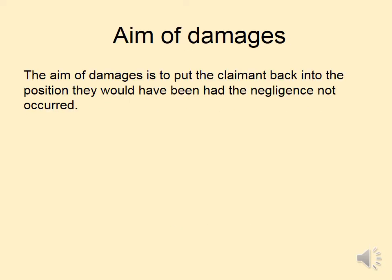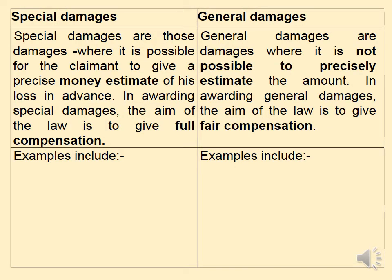The aim of damages is to put the claimant back into the position they would have been in had the negligence or whatever the tort might be not occurred. Damages can be split into two types. Special damages is where it's possible to give the claimant exact compensation — a precise money estimate — and the aim is to give full compensation. Things included in special damages are clothing damaged in the incident, medical expenses incurred up to the date of the trial, and loss of earnings up to the date of the trial, where you will have receipts and exact figures.